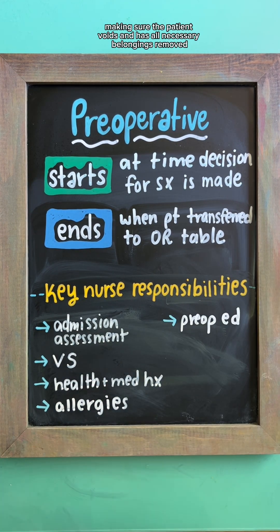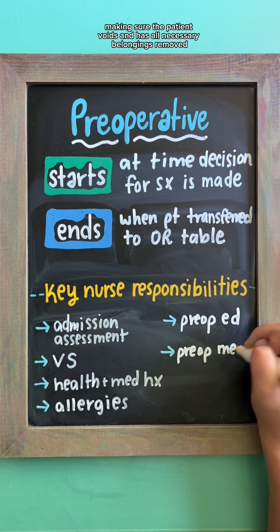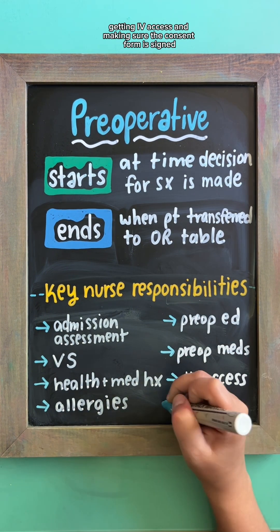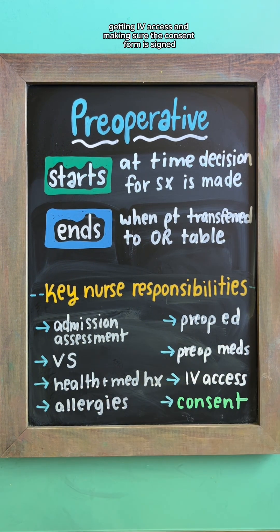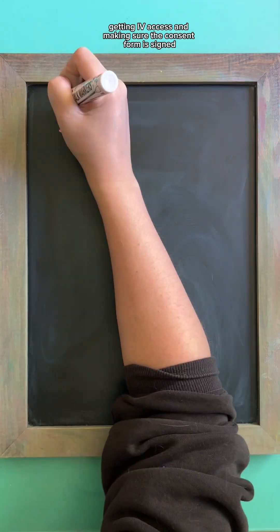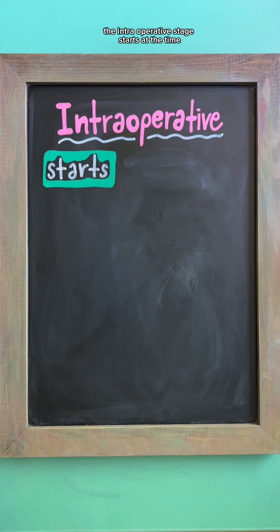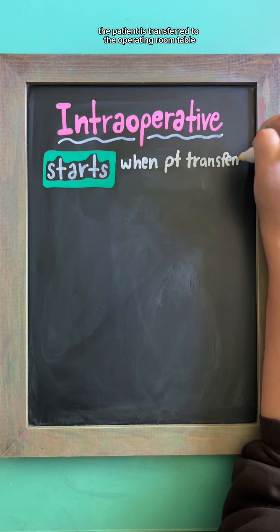Additional pre-op responsibilities include making sure the patient voids and has all necessary belongings removed, getting IV access, and making sure the consent form is signed.